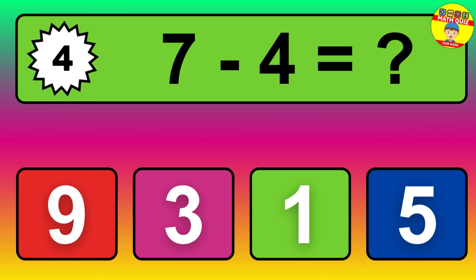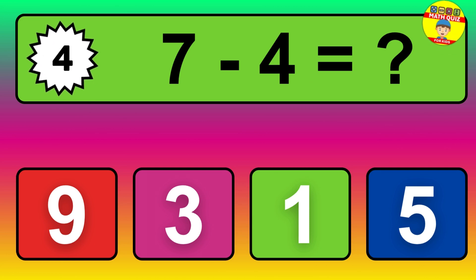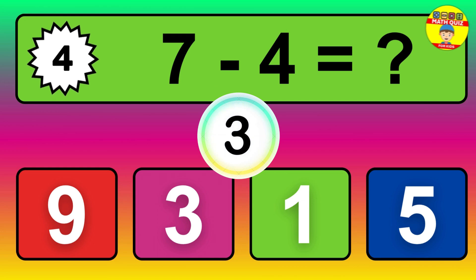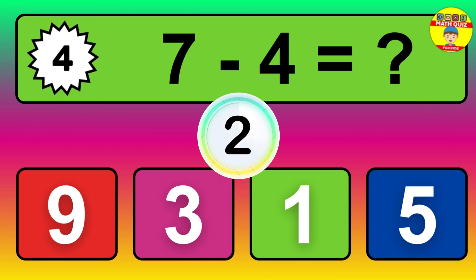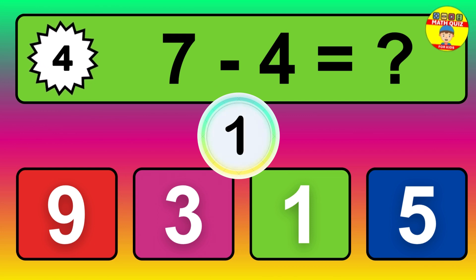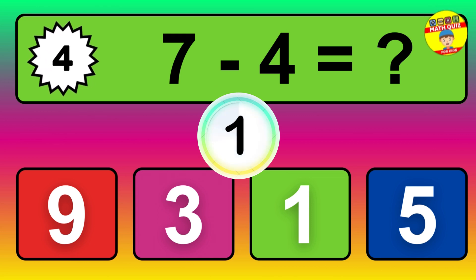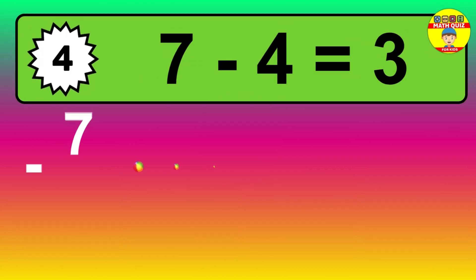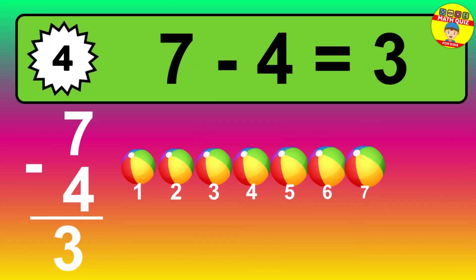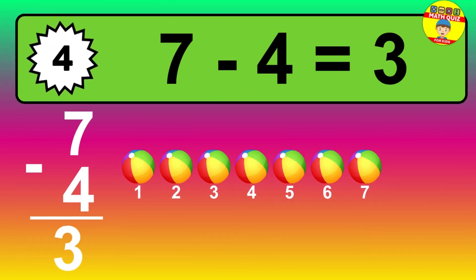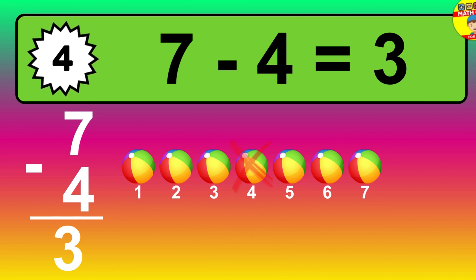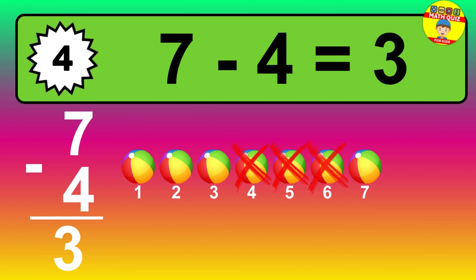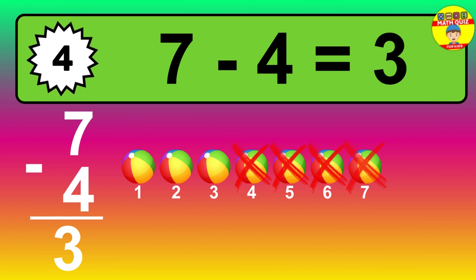Question four: seven minus four equals what? So the answer is seven minus four is three. Let's count it. One, two, three.